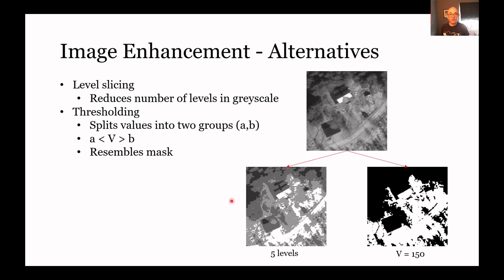This is quite similar to thresholding, but in thresholding we actually only have two levels. We choose some value below which everything is zero and everything above it is one, which essentially creates a mask from our data. Thresholding is like level slicing but with just two levels.